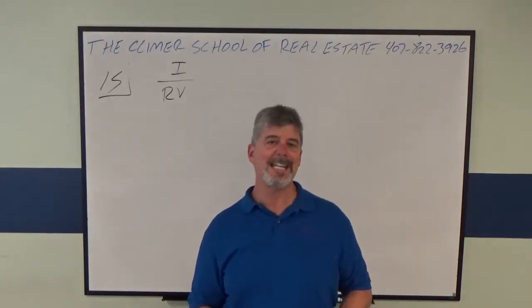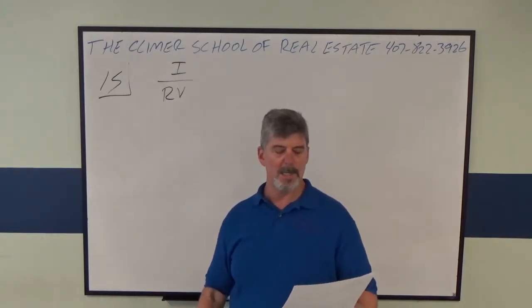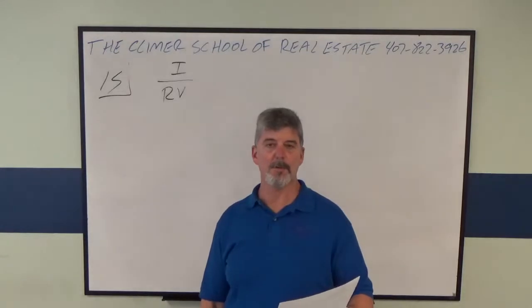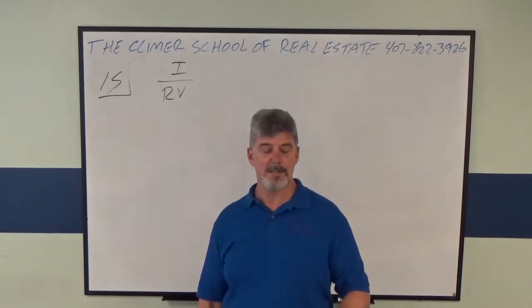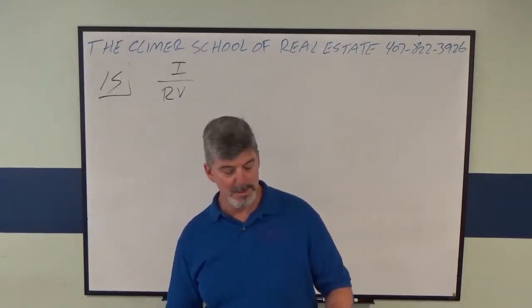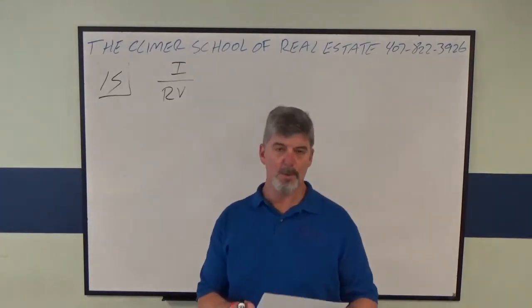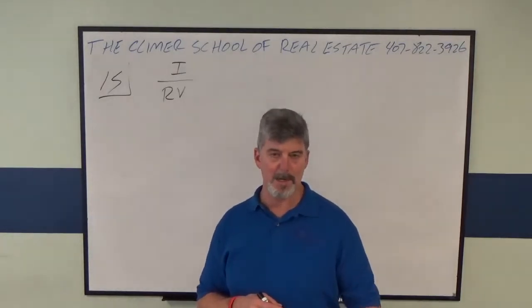This is an income capitalization problem, so let's see what it says. Commercial property has a potential gross income of $240,000. Vacancy and collection losses are 10% of PGI. Additional operating expenses are $60,000. Payments on the first mortgage are $1,675 per month. Using a capitalization rate of 12%, what amount is an accurate estimate of the property's value?